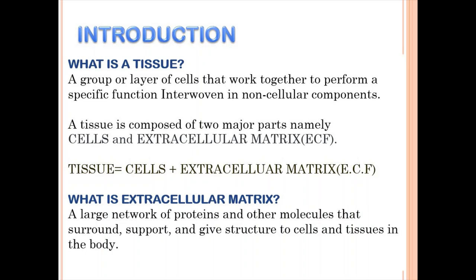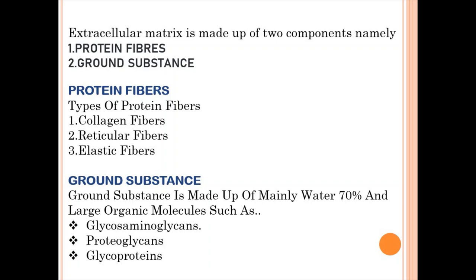We all have an idea of what cells are — the most basic functional units that make up a living thing. Extracellular matrix is a large network of proteins and other molecules that surround, support, and give structure to cells and tissues in the body. In extracellular matrix there are two major components: protein fibers and ground substance.